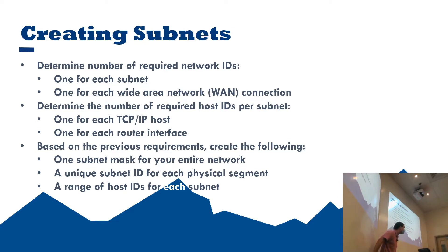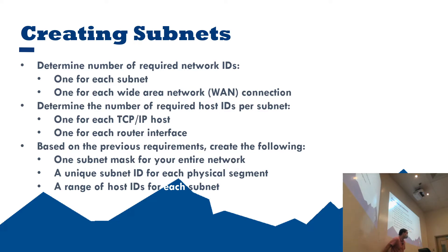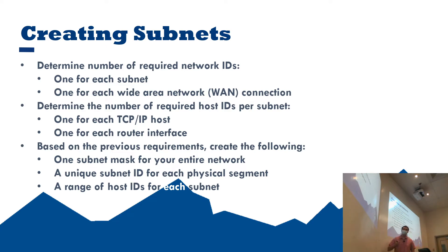Pretty much any equipment from the past five to ten years is going to be able to mitigate a lot of the problems associated with loops. In addition to one per TCP/IP host, you obviously have to have one for each router — so if you have 20 routers on a network, add 20. Once you've gathered all the information, you make one subnet mask for the whole network and assign different subnet IDs for the physical segments and each subnet.